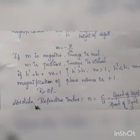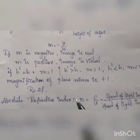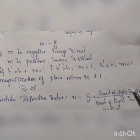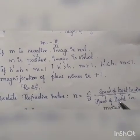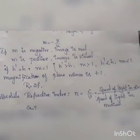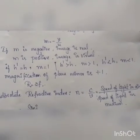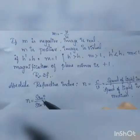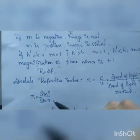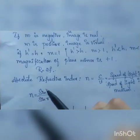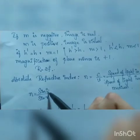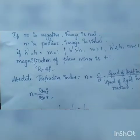The absolute refractive index is n = c/v, that is speed of light in vacuum divided by speed of light in any medium. The speed of light in vacuum is 3 × 10⁸ m/s. Another formula for refractive index in terms of rays is n = sin(i) / sin(r), that is sine of angle of incidence divided by sine of angle of refraction.